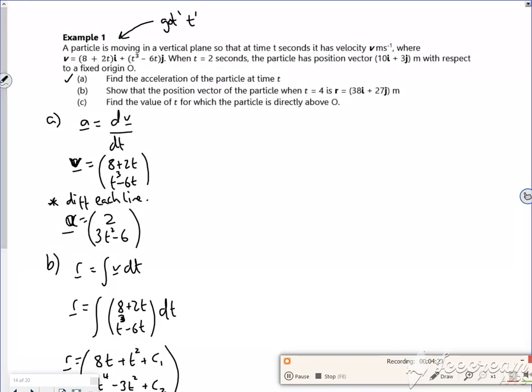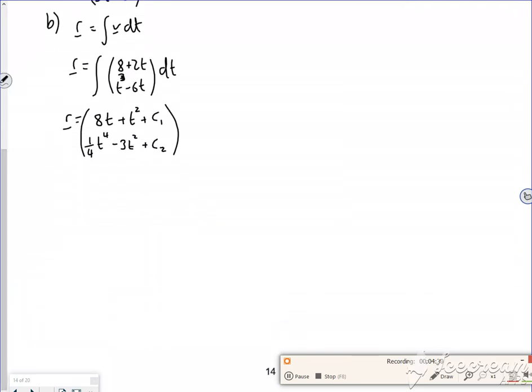Now I've got to find my c value, and it tells you when t is 2, the position vector is 10, 3. So for t is 2, r is 10, 3. So let's have a look at the top line. 10 is 8 lots of 2 plus 2 squared plus c1. So 10 is, so what have I got? So I've got 16 plus 4 is 20. That's c1. So c1 is minus 10. Let's look at the bottom line.